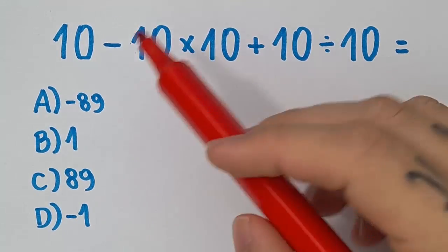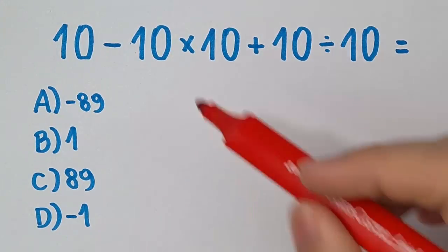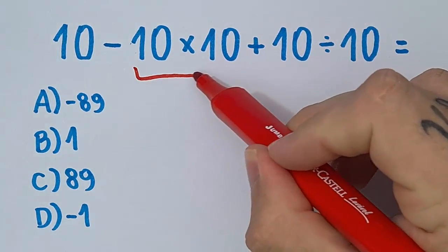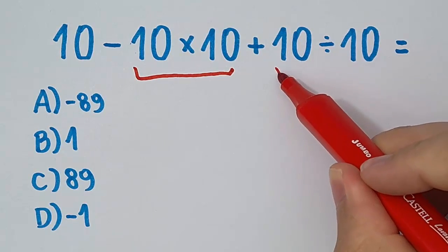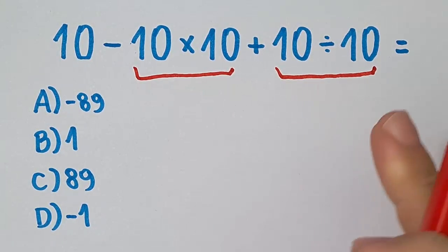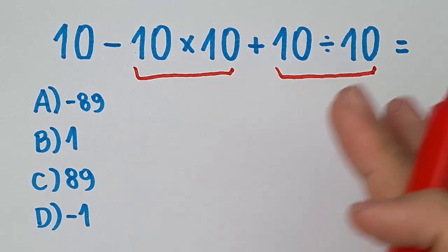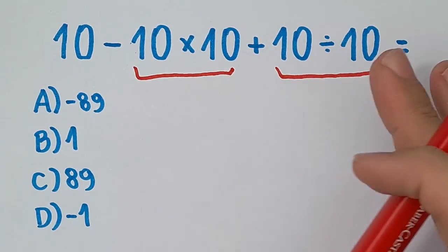Be careful, we can't do 10 minus 10 first. First of all, we're gonna take this and this because these operations are priority, okay? These two operations have the same priority, so we can do it in the order of appearance.